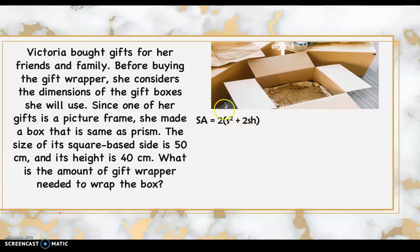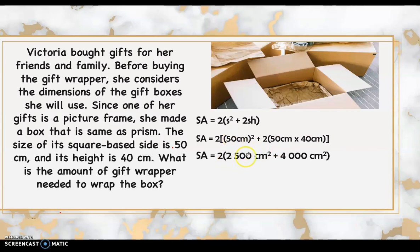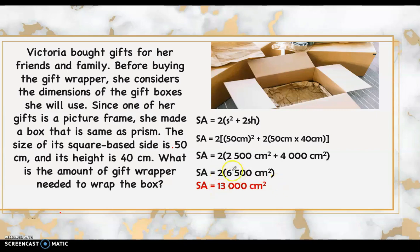Substituting: s is 50 centimeters, so s squared is 2500. Then 2 times 50 times 40 equals 4000. Adding 2500 plus 4000 gives 6500, and multiplying by 2 gives a surface area of 13,000 square centimeters. Therefore, Victoria needs 13,000 square centimeters of gift wrapper.